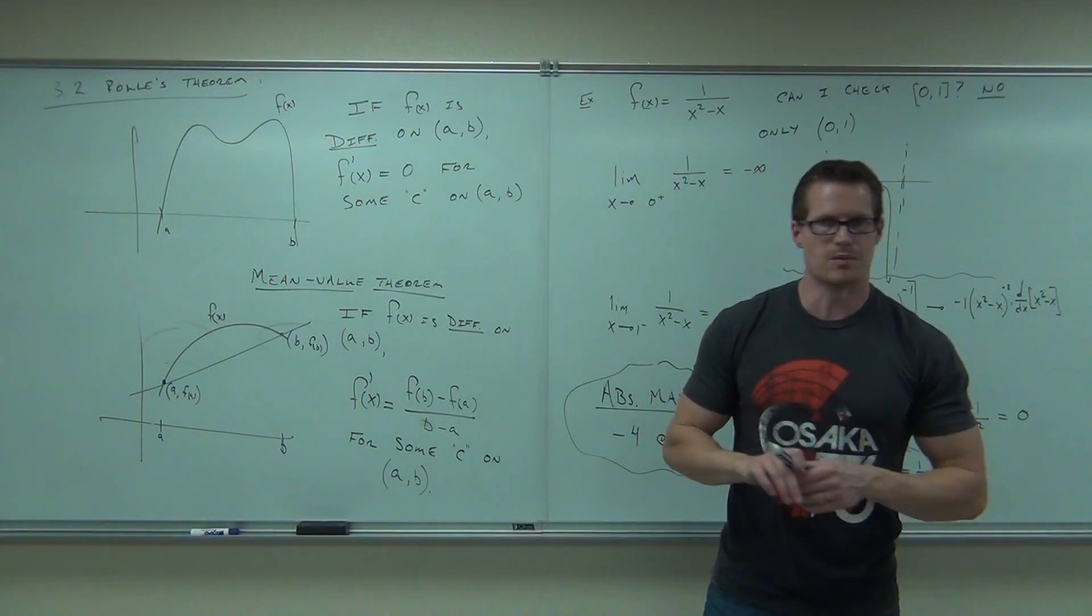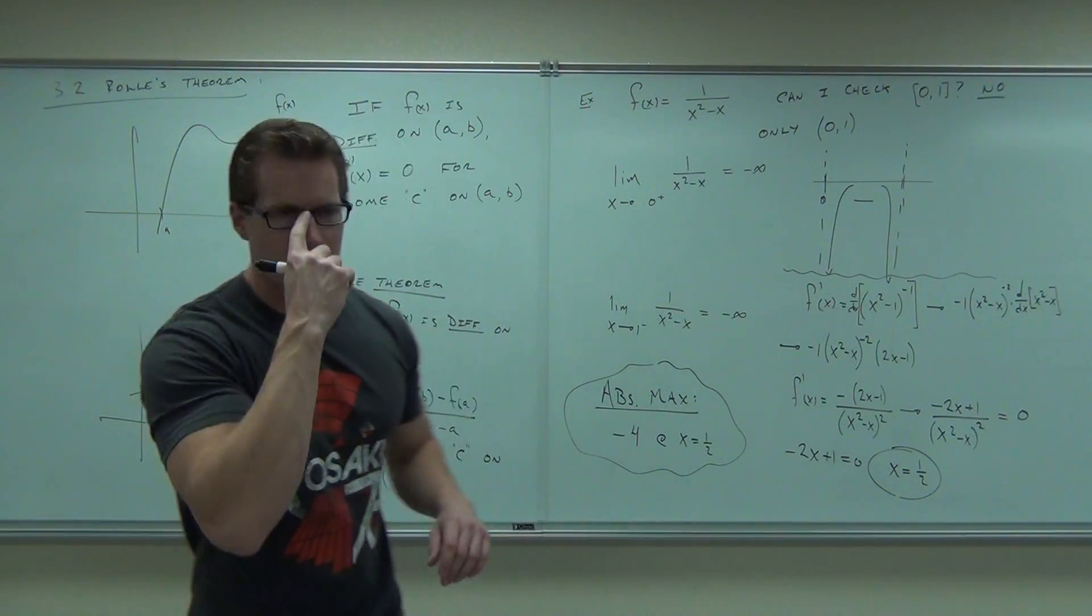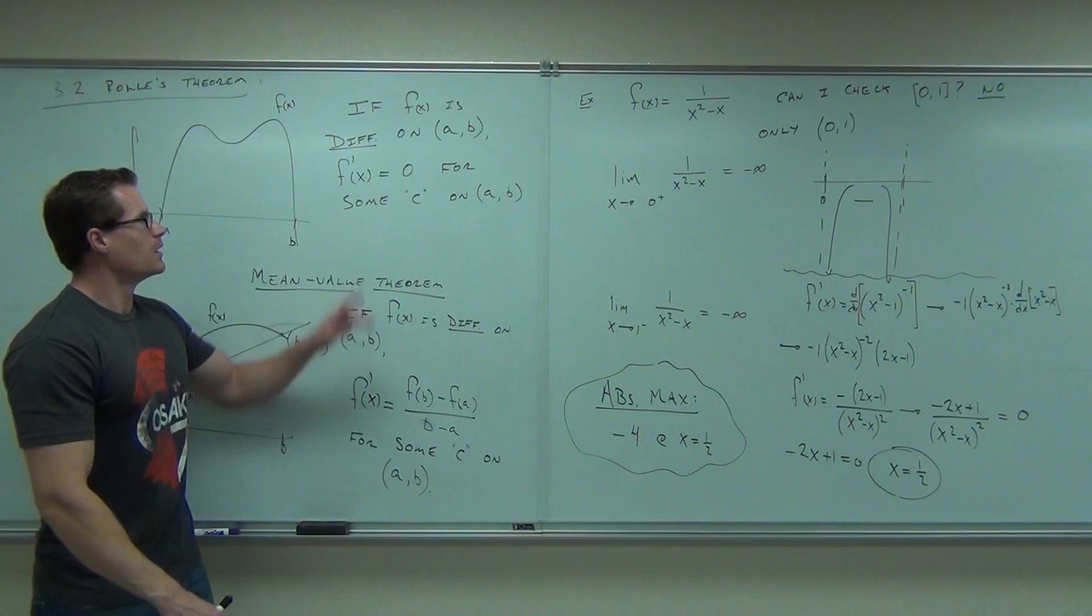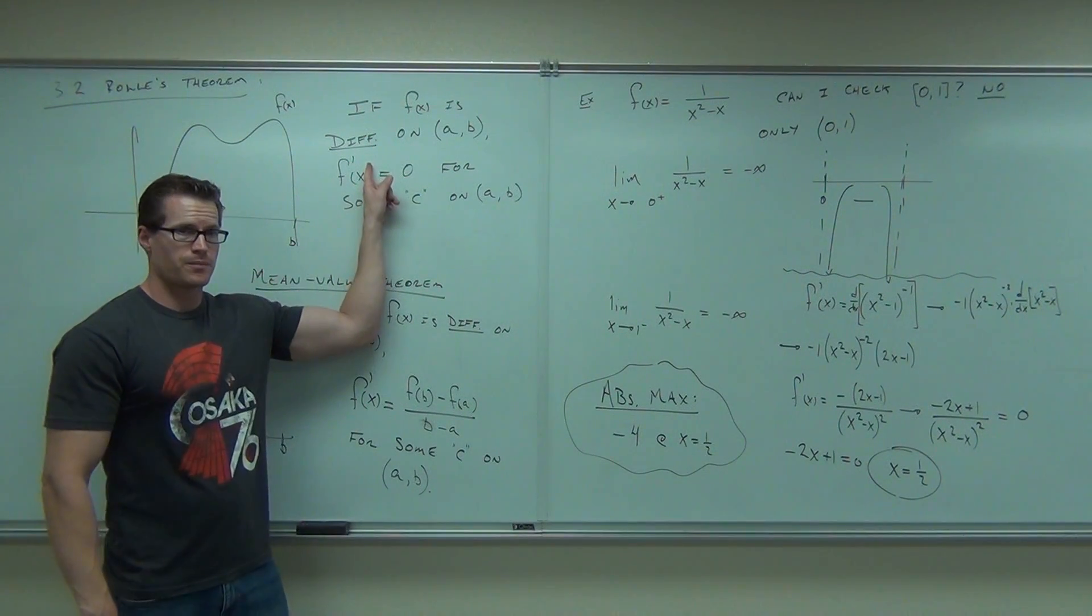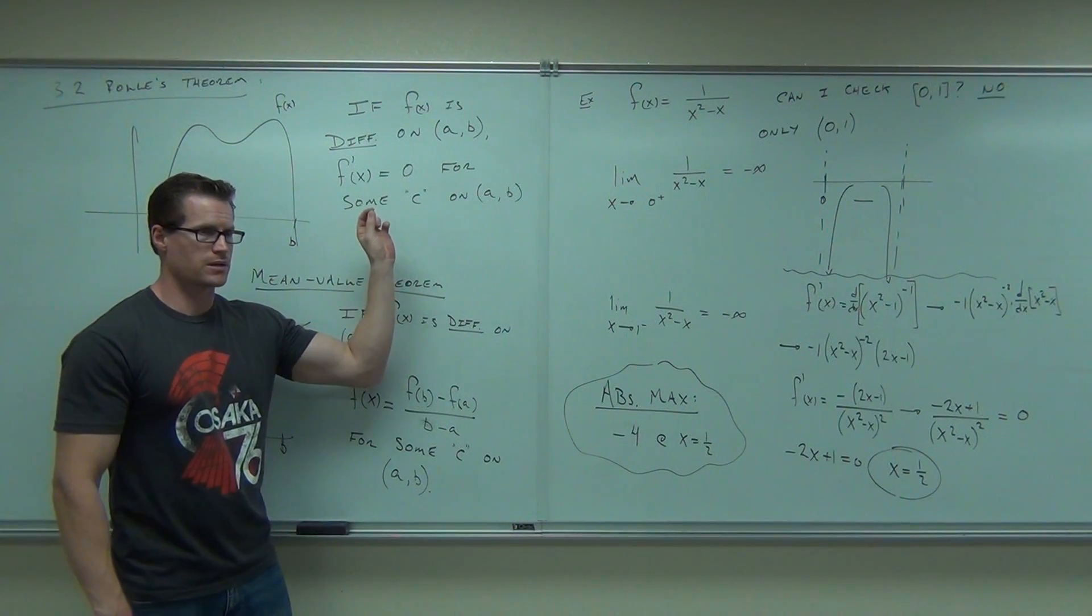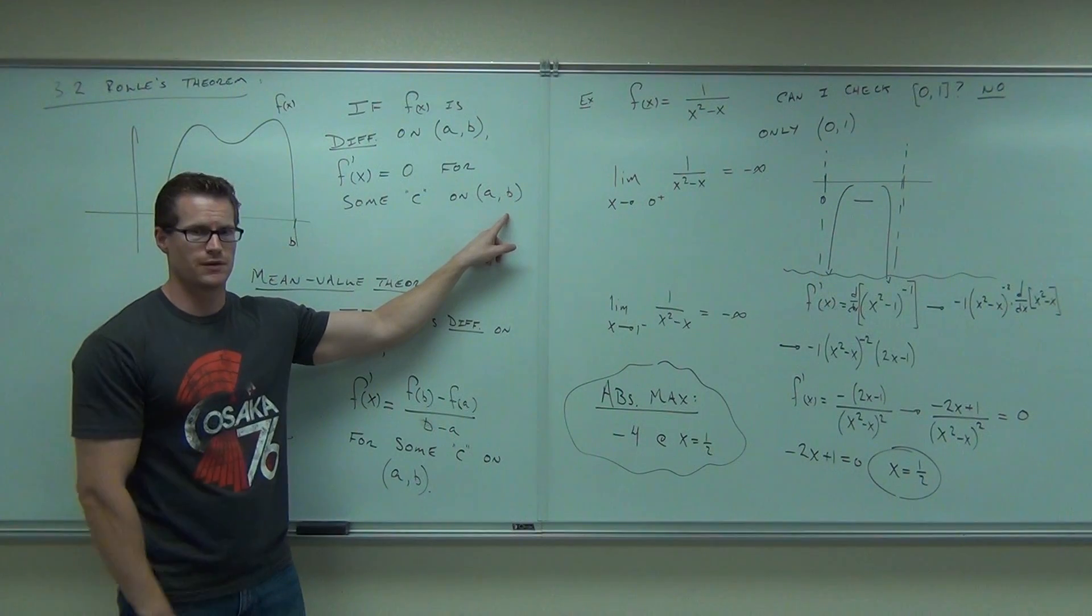That's Rolle's Theorem and Mean Value Theorem. If you're required to check these, which I think some of your homework says that, what you would do is this. This is it. For Mean Value Theorem, you find the first derivative. You set it equal to zero. You're going to get an x value, right? All you need to do is verify that the x is between a and b. It will be. If it's continuous, it will be.